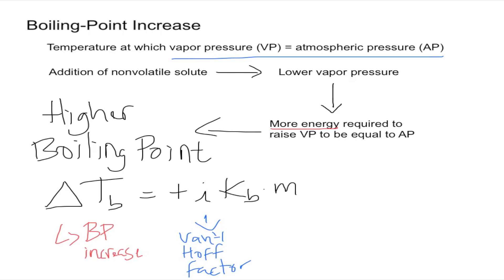The m, the little m, is molality. And finally, the kb is a constant that you're given. It's usually given in units of temperature times mass over moles. So it's usually Celsius times kilograms over moles.